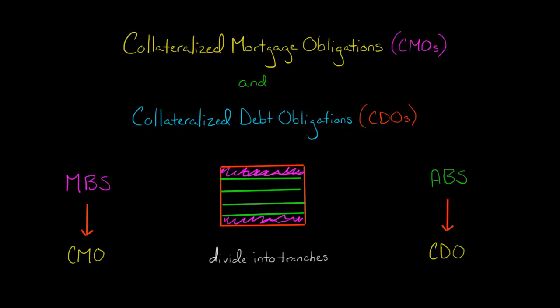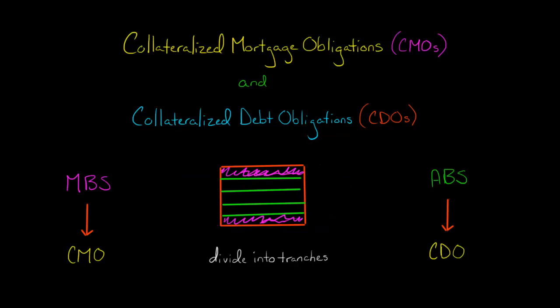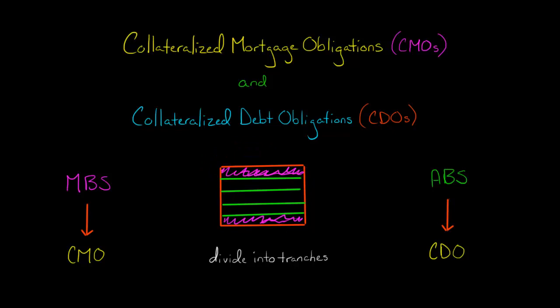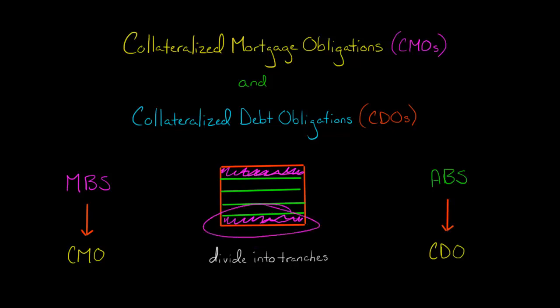Let's say there are defaults — because this is based on a pool of mortgages, and some people default and don't pay their mortgage. The investors in the top tranche are going to get their money first, whereas the ones who invest in the bottom tranche are going to get paid last. So there's more risk in the bottom tranche. Why would anyone invest in that? Well, there's a higher potential return — higher potential return, but the highest risk.